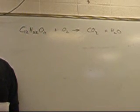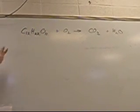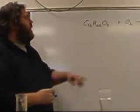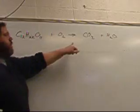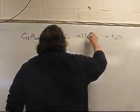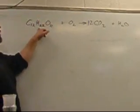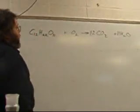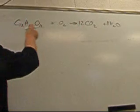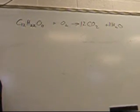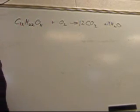This is going to be the overall chemical reaction — you can go ahead and balance this equation. I have 12 carbons here, so I need 12 CO2. I have 22 hydrogens, so I need 11 H2O. And now that gets me: 12 times 2 is 24, plus 11 is 35 oxygens on that side.